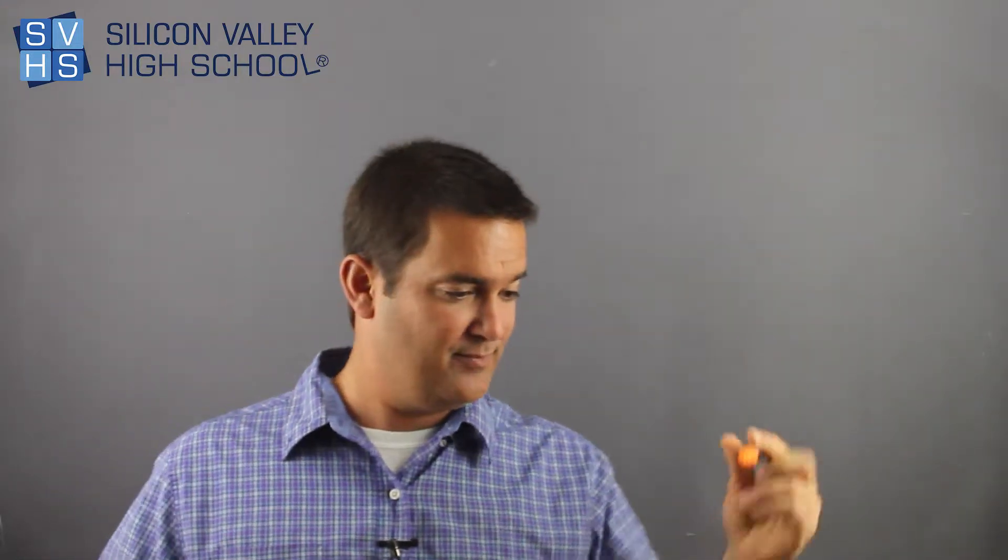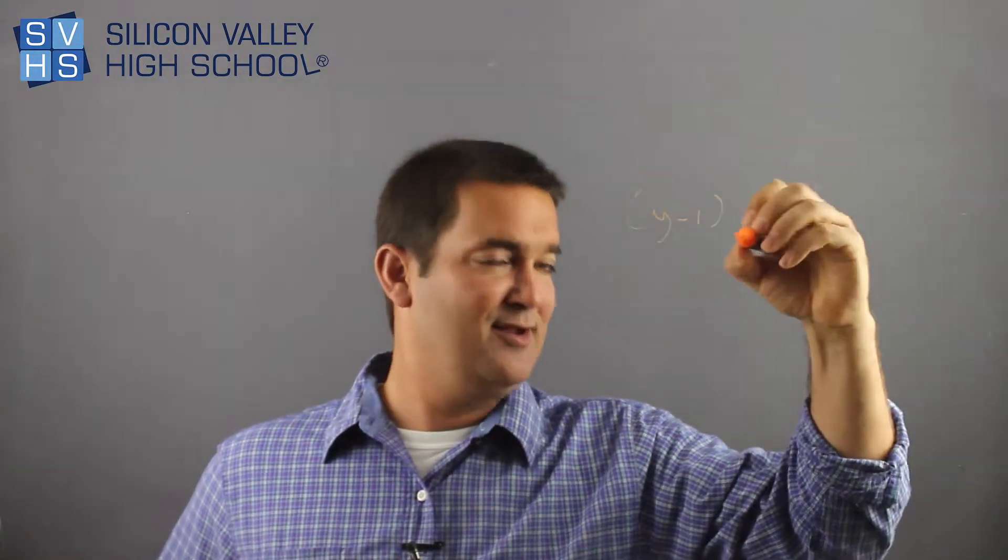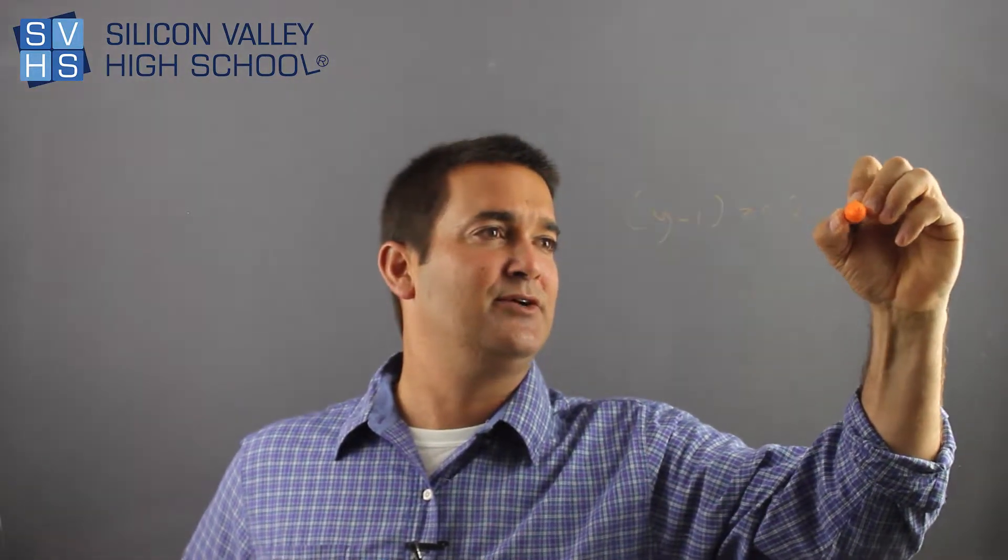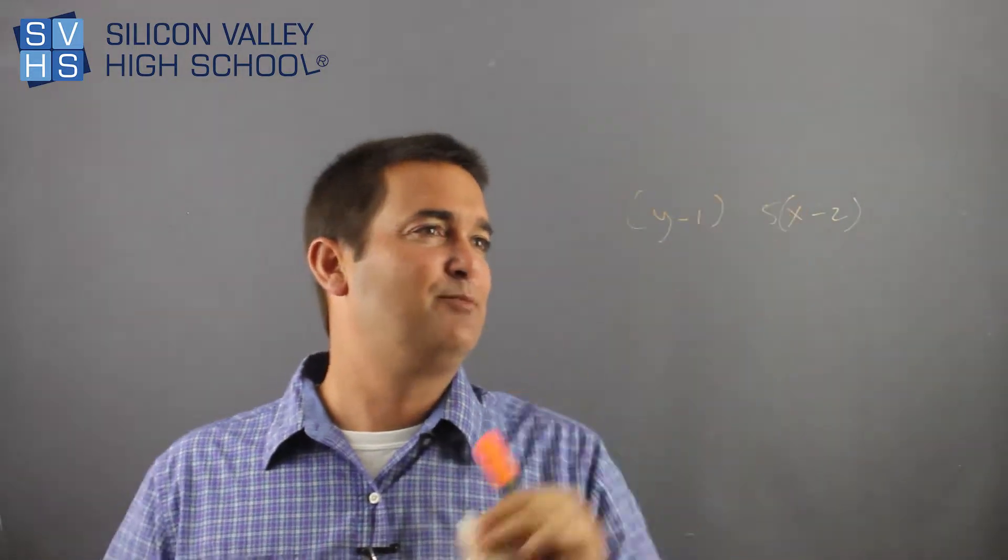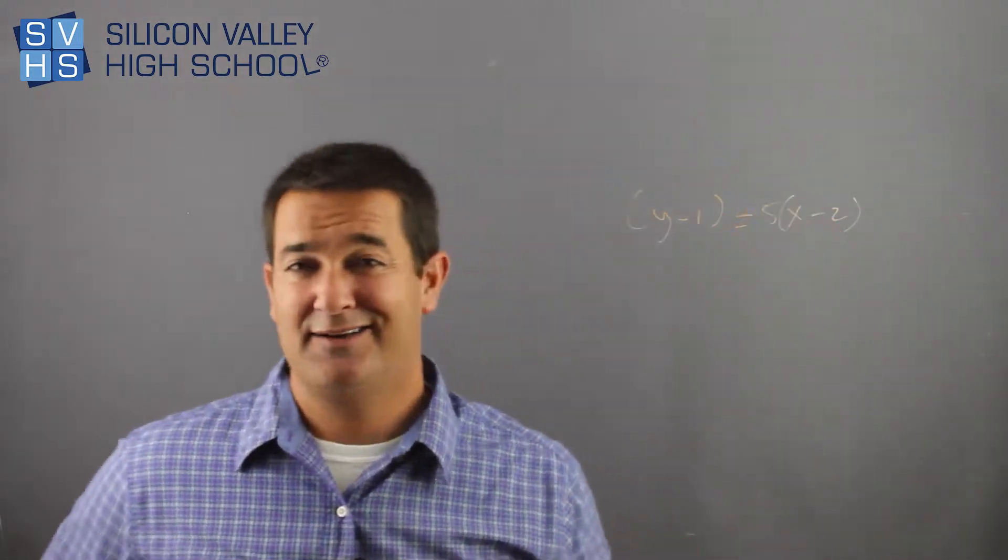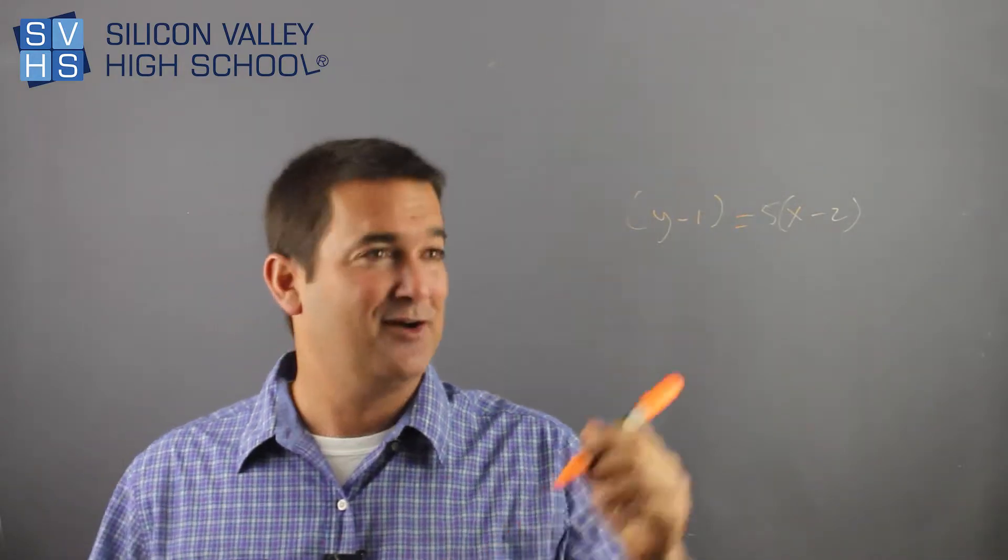So here's one that they gave us in point-slope form. Let's say it's like y minus one equals five times, parentheses, x minus two. And they want us to put this in standard form because they're evil, right? So let's do it.